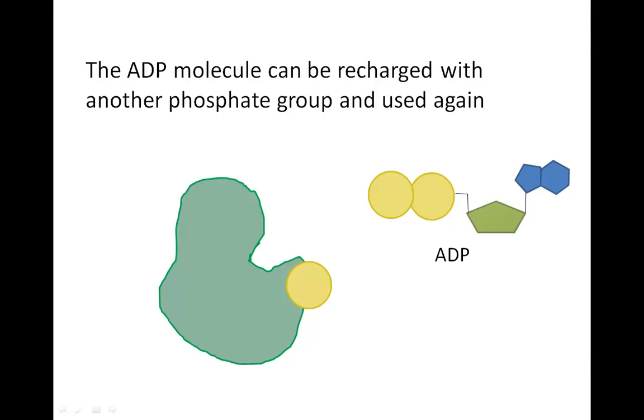Removing the third phosphate group creates ADP, or adenosine diphosphate. Another phosphate group can be added back to form ATP, so the process can continue.